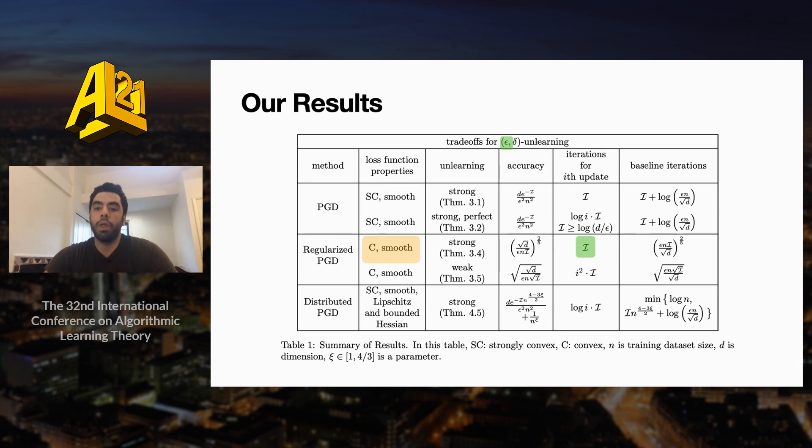Whereas if we wanted to use full retraining to get the same level of accuracy, we would need a number of iterations that grows polynomially with the sample size n. And so our deletion algorithm in this case is substantially faster than fully retraining.